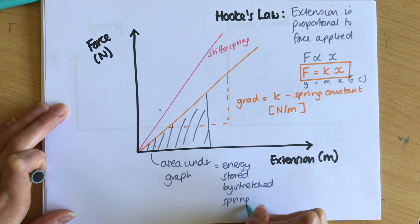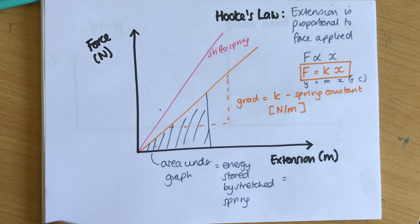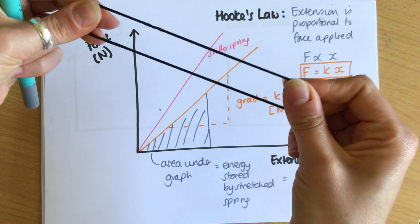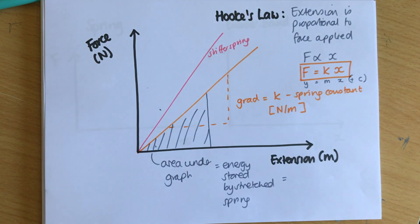You might have done energy so far in your GCSE and one of the stores of energy is elastic potential energy. When you stretch your spring or stretch something, you've stored the energy now because when I let go it pings away and turns into kinetic energy. There's another equation for this: the energy stored by the stretched spring is equal to one half kX squared.